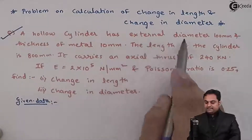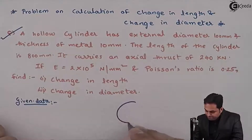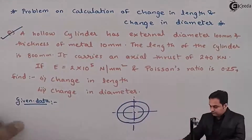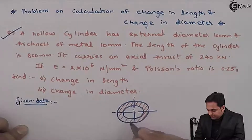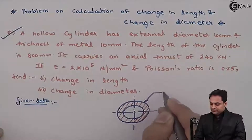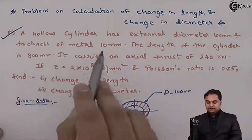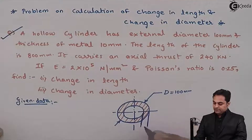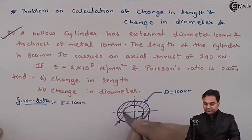A hollow cylinder has external diameter 100 mm. I'll draw the diagram — this is the cross-section of the hollow cylinder. The external diameter is 100 mm and the thickness of metal is 10 mm, denoted as t = 10 mm. There is another thickness of 10 mm on the other side as well.